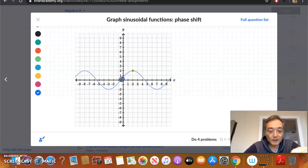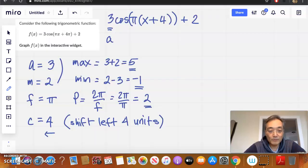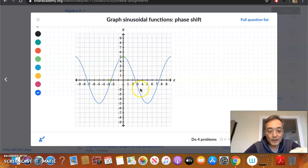So cosine starts at the max. So I'm just going to kind of scoot this over a little bit. We're going to start at the max at 5, correct? And let me just see what my values were. My minimum is negative 1, correct? So I have my minimum at negative 1. And the period was 2.